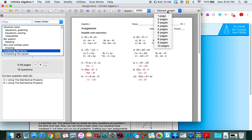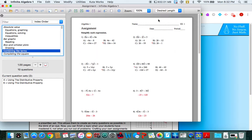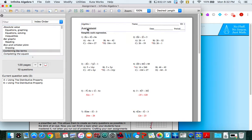So, I'm going to change the desired length to one page and I'm going to click on assignment and I'm going to call this combining like terms. It's only one version so I don't need this and I'm going to click OK.